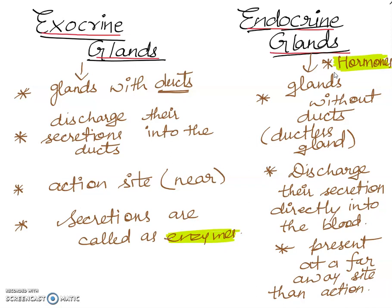This video is very much helpful for your basic understanding of the differences between exocrine and endocrine glands. We have discussed four points: one related to ducts, second to secretion pathway, third to location, and fourth to the names of secretions — enzymes and hormones. In the next video, I will discuss the characteristics of hormones in detail. Thank you my dear students, I hope we will meet soon. Take care, bye!